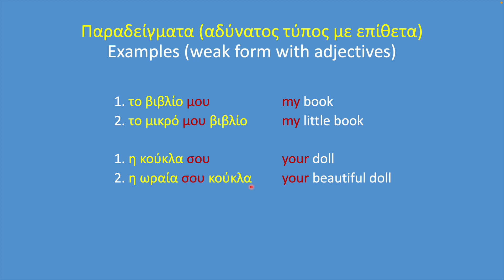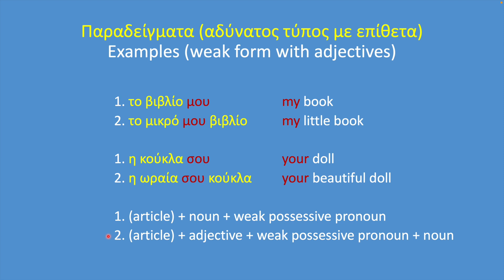Here is a formula for both cases, with and without an adjective. Formula one, without an adjective: article (in parenthesis because in the vocative case we don't use an article) + noun + weak possessive pronoun. Formula two, with an adjective: article (if there is one) + adjective + weak possessive pronoun + noun.